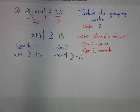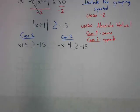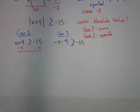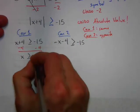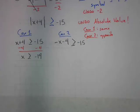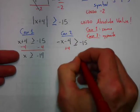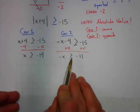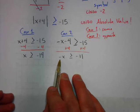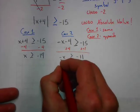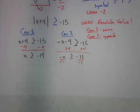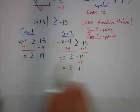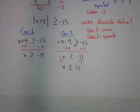Finishing up case one and case two — now that both cases are set up, we solve each one. For case one, I need to undo plus four by subtracting four from both sides, giving x ≥ -19. For case two, I have negative x minus four; I undo minus four with plus four, giving negative x ≥ -11. Since x isn't by itself, I divide both sides by negative one — and again, dividing an inequality by a negative flips the sign — giving x ≤ 11.